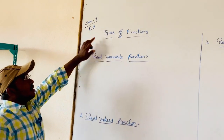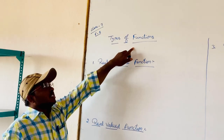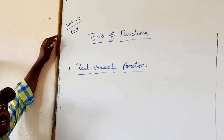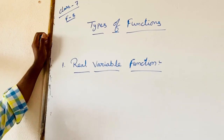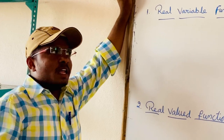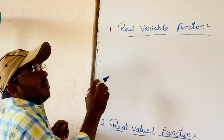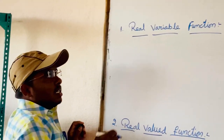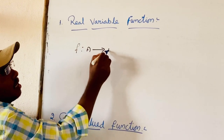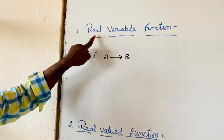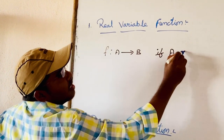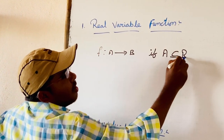Today's lesson is the second class. The topic is types of functions, page number F8. The first one is real variable function. If the domain of a function is a subset of real numbers, it is called a real variable function. A function F mapping A to B is said to be a real variable function if A is a subset or equal to R.